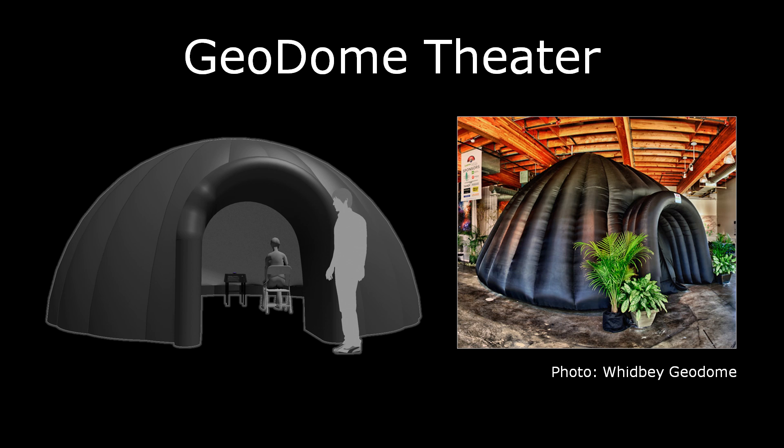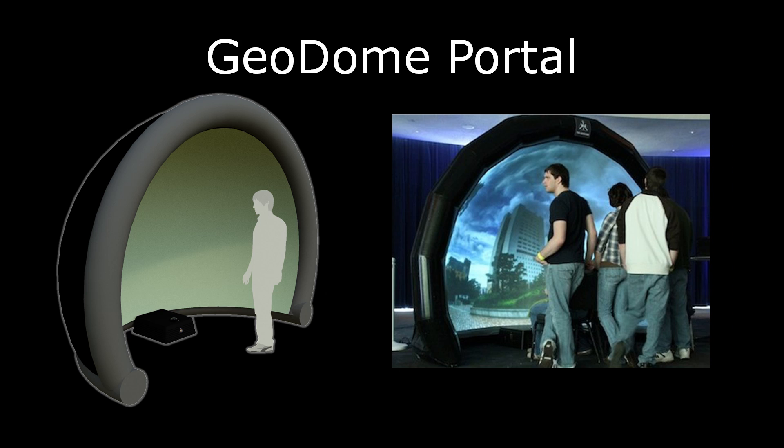This is what a geodome looks like on the outside. In essence, it is a portable, inflatable, video projected planetarium. This is the geodome portal. The projector is placed down at the bottom front of the screen. Omniti is powerful enough to be able to generate the proper geometry correction given any position of the projector, screen, and sweet spot of the viewer.